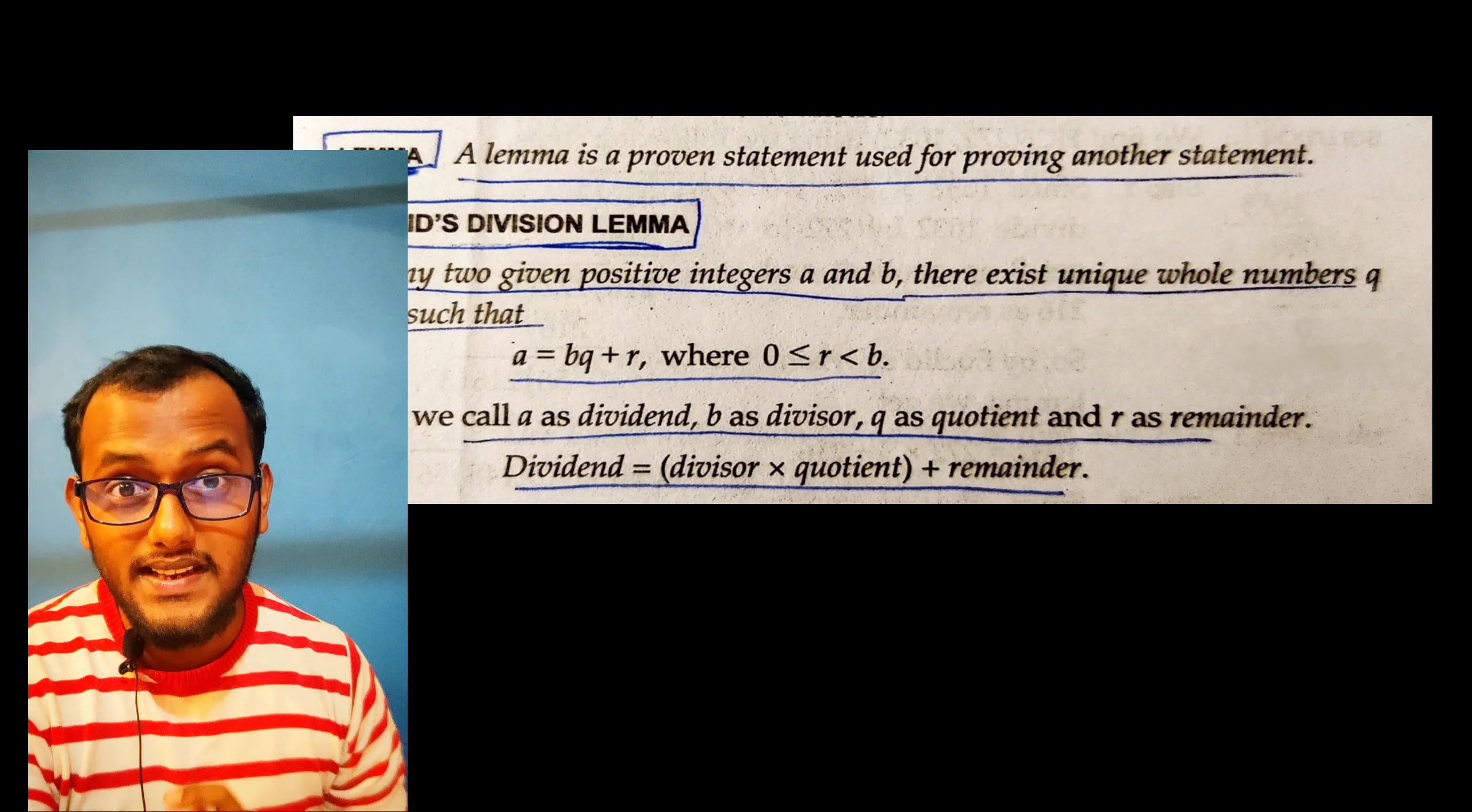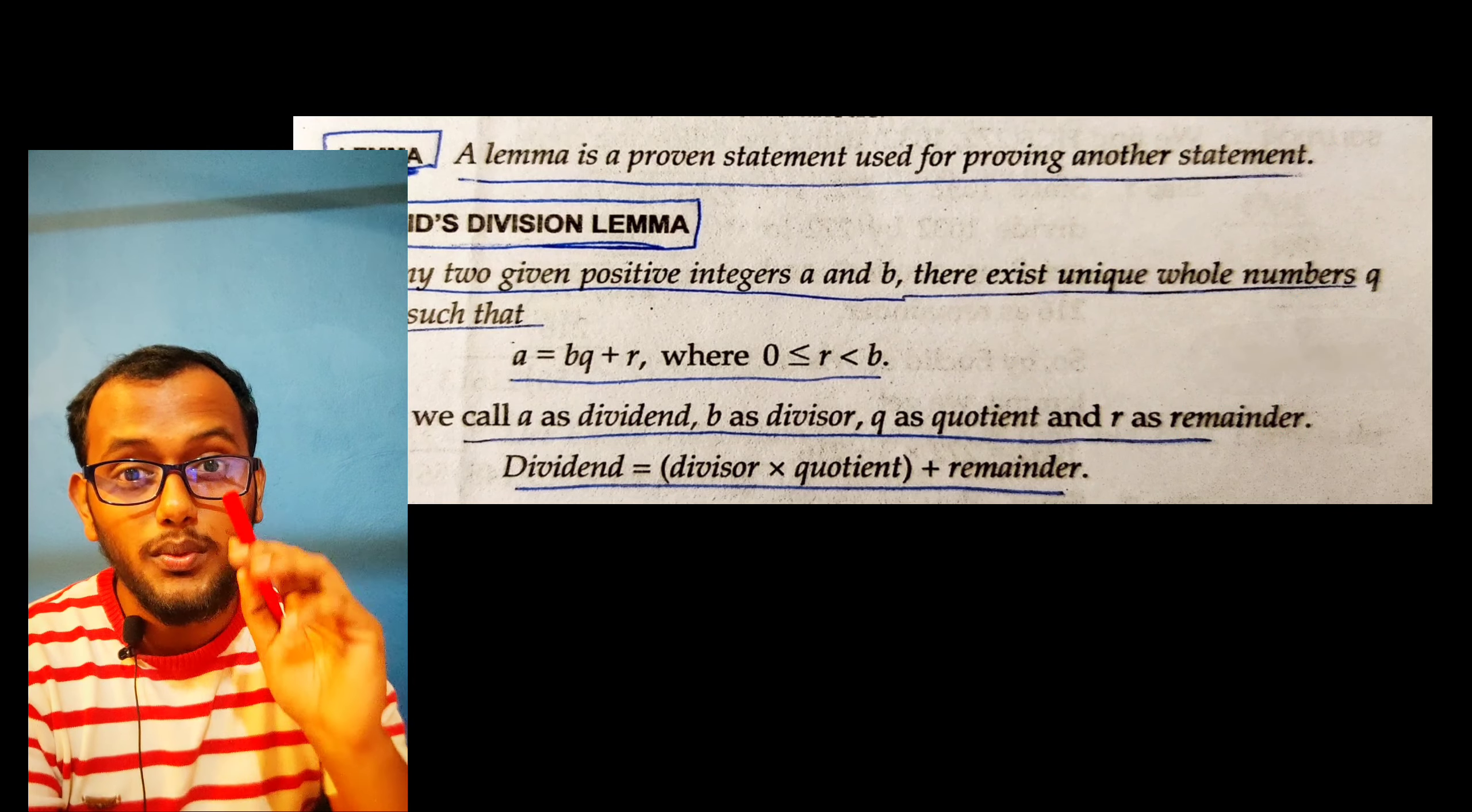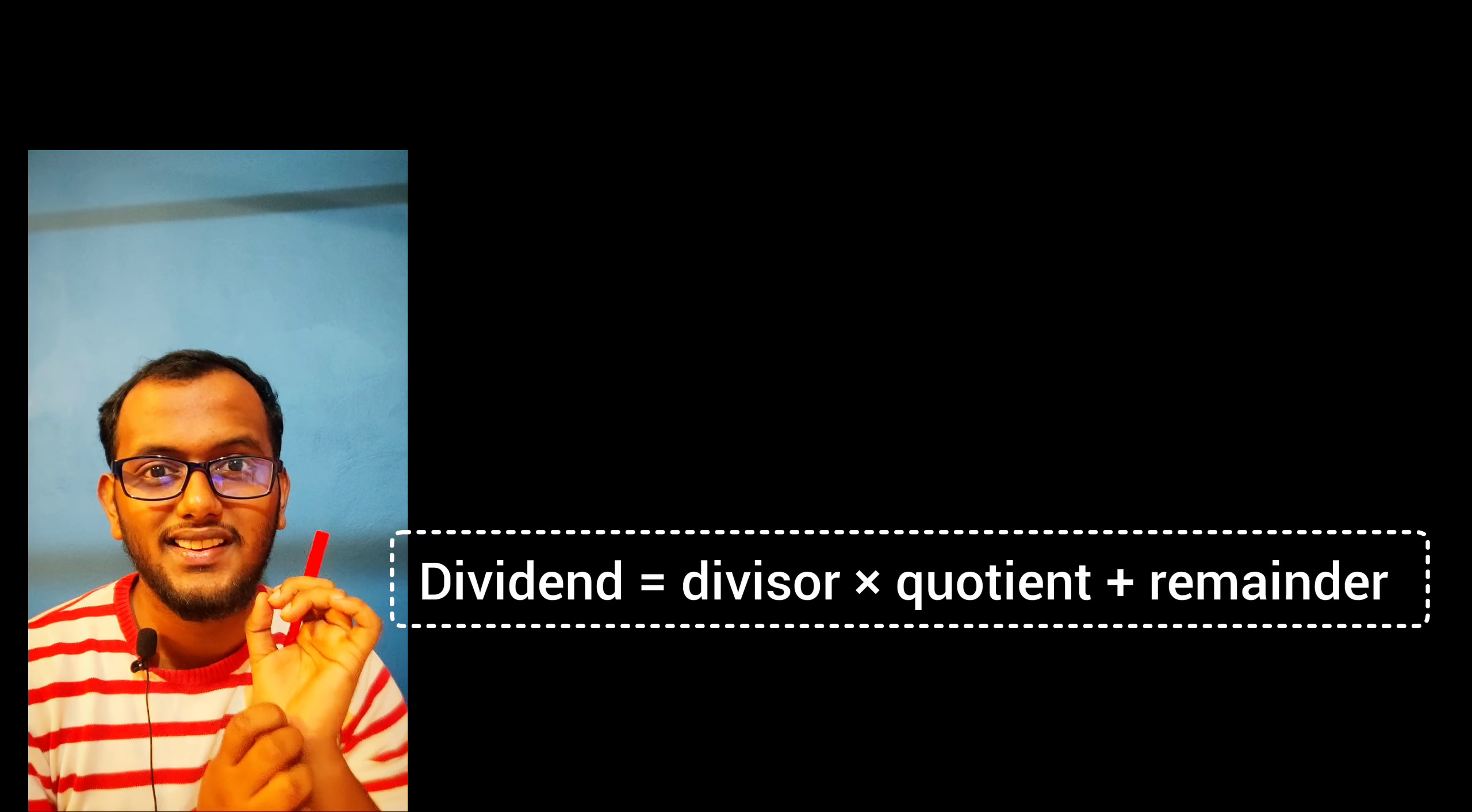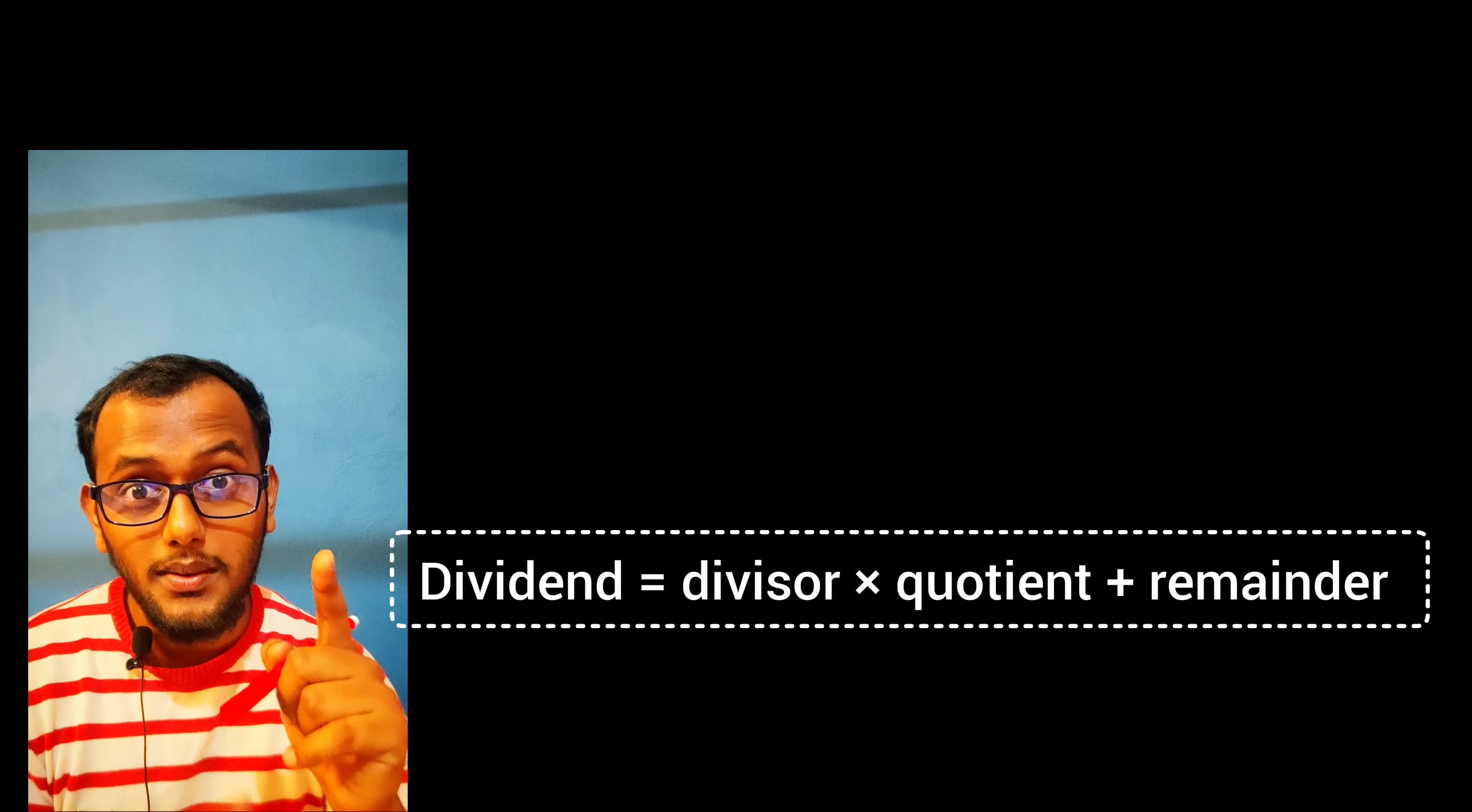a = bq + r. This represents dividend equals divisor times quotient plus remainder. Euclid's Division Lemma is essentially the division formula you learned in earlier classes: dividend = divisor × quotient + remainder. Let me explain this with an example.